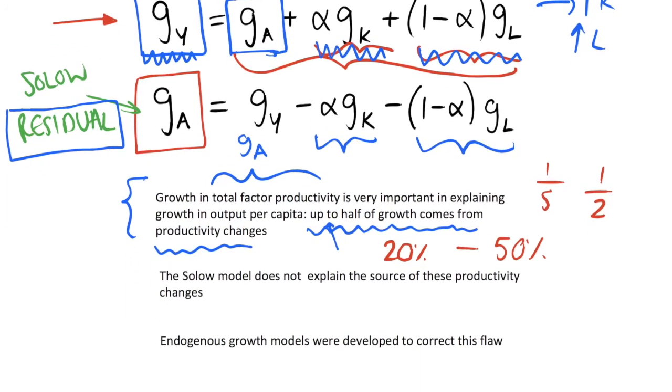Another thing to note here is that the Solow growth model doesn't actually explain the source of these productivity changes. We know we use g_A equals G, and in the Solow model this is just completely exogenous and it's constant with growth rate G every year.